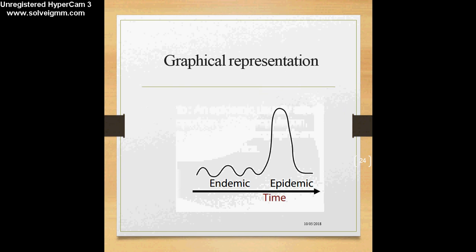If we graphically represent an endemic and an epidemic, we can say that with time, endemic is the constant presence at the usual or expected frequency. When this frequency suddenly rises, the number suddenly rises, it can be considered an epidemic. A disease which is endemic can have epidemic potential — it can become an epidemic — and that's how by surveillance we can check whether a particular endemic disease is reaching epidemic proportions, so preventive measures can be initiated.